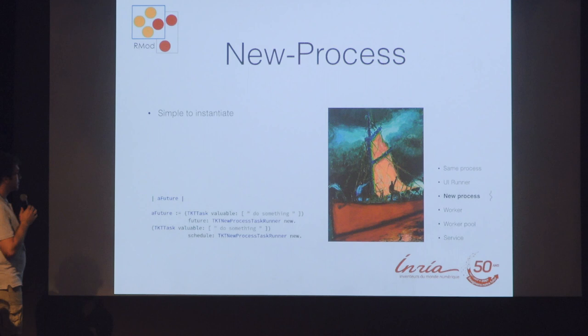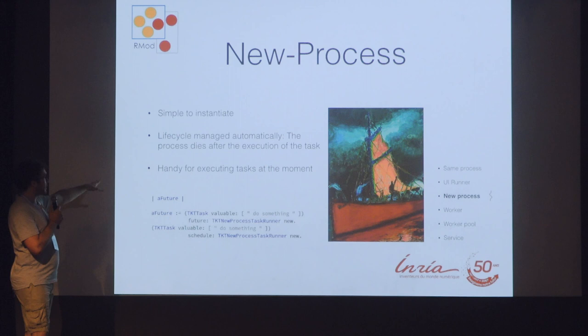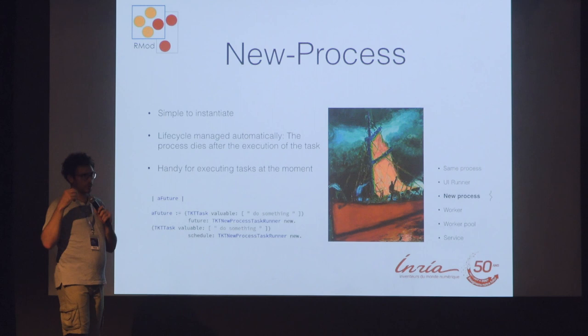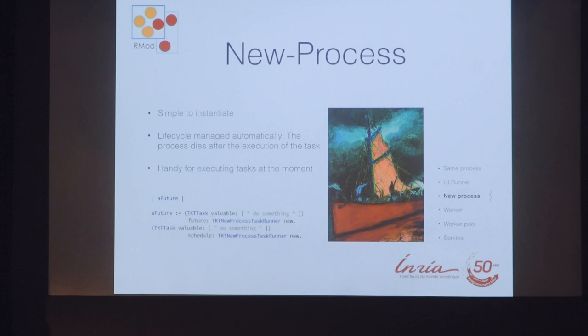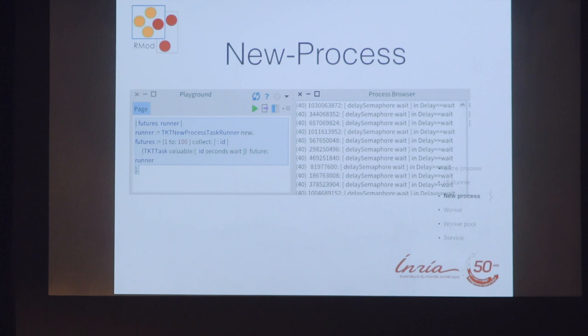After we have the fork runner, which is about processes. It's simple to instantiate — it spans one process, it works exactly like a fork. The life cycle is managed automatically; after execution of the process there is some cleanup done on the framework side. It's handy for executing tasks immediately if you want to execute something right now. But you are caring about the balance of the image by yourself — you can fall into the same problem we talked about in the beginning, like having too many threads and the image may collapse. You can see the process browser spawning 100 different processes.